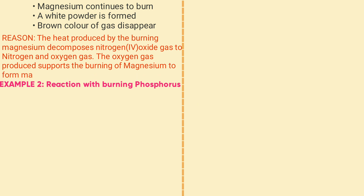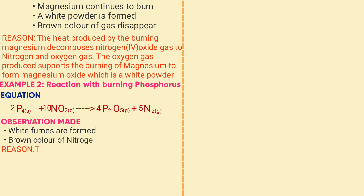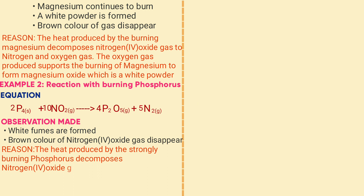Example two: reaction of nitrogen dioxide with burning phosphorus. Equation: P₄ + 10NO₂ → P₄O₁₀ + 5N₂. Observation: white fumes are formed and the brown color of nitrogen dioxide gas disappears. Reason: the heat from burning phosphorus decomposes brown nitrogen dioxide gas to nitrogen and oxygen; the oxygen reacts with hot phosphorus to form phosphorus pentoxide (P₄O₁₀), which appears as white fumes.